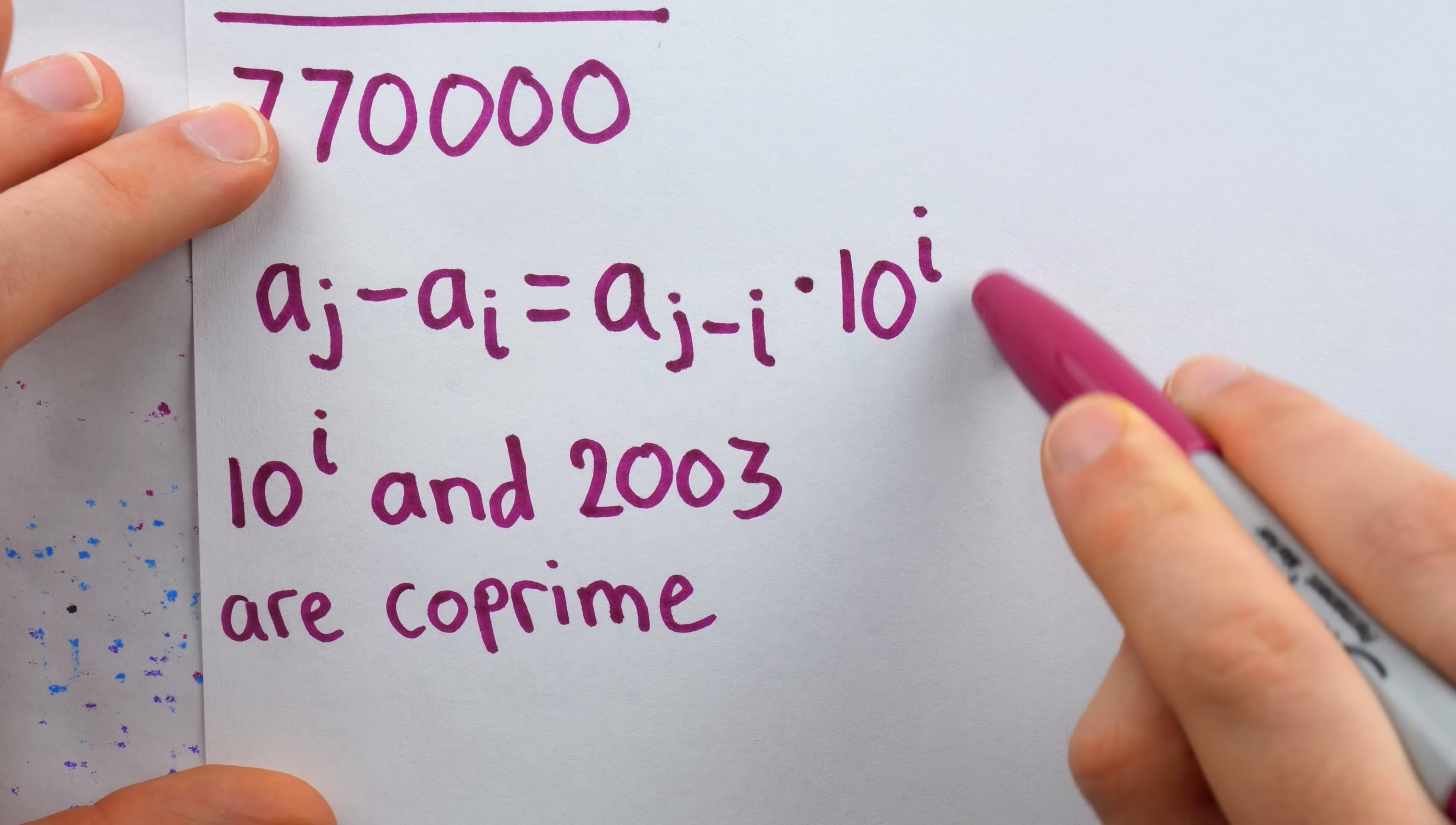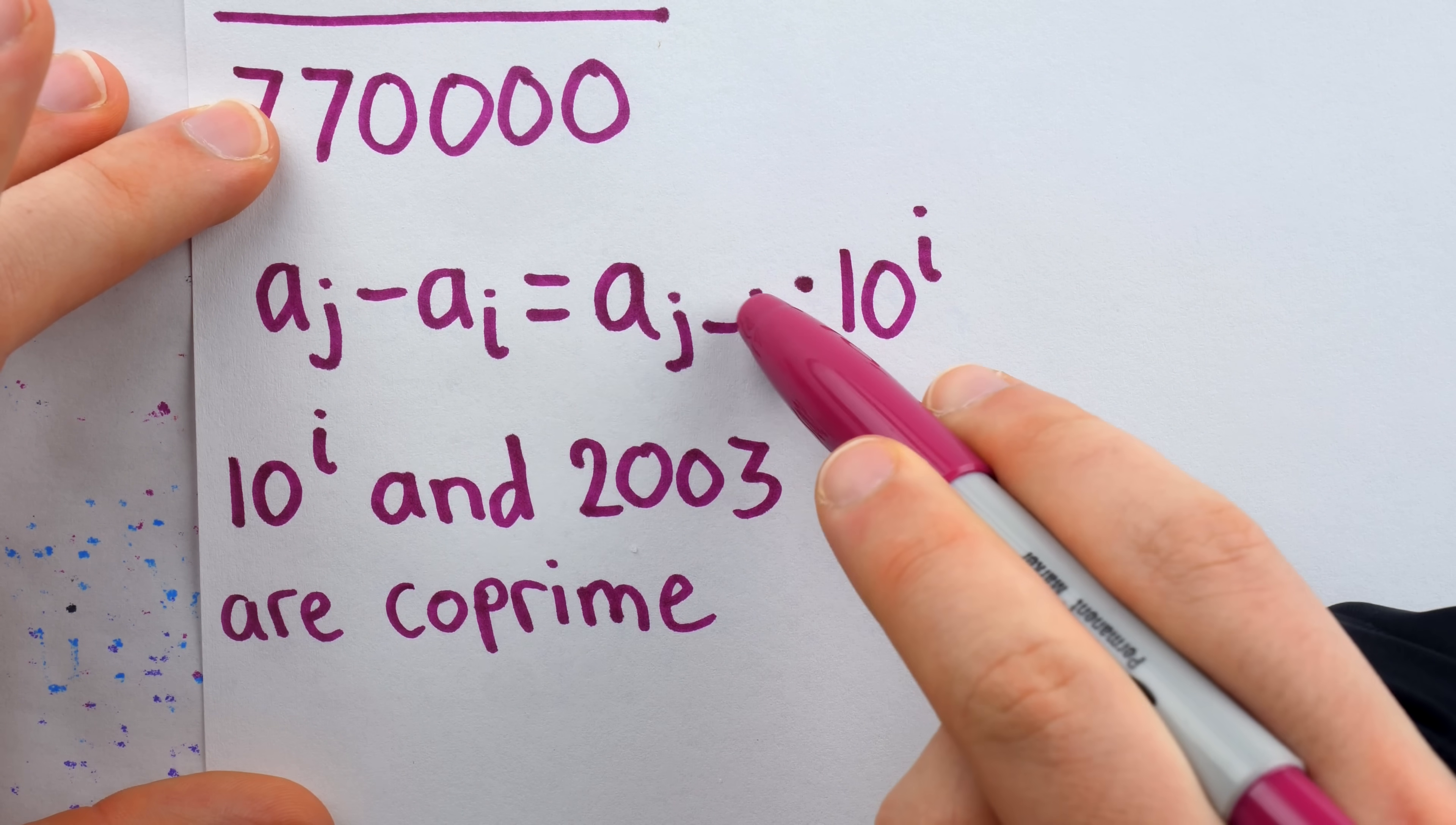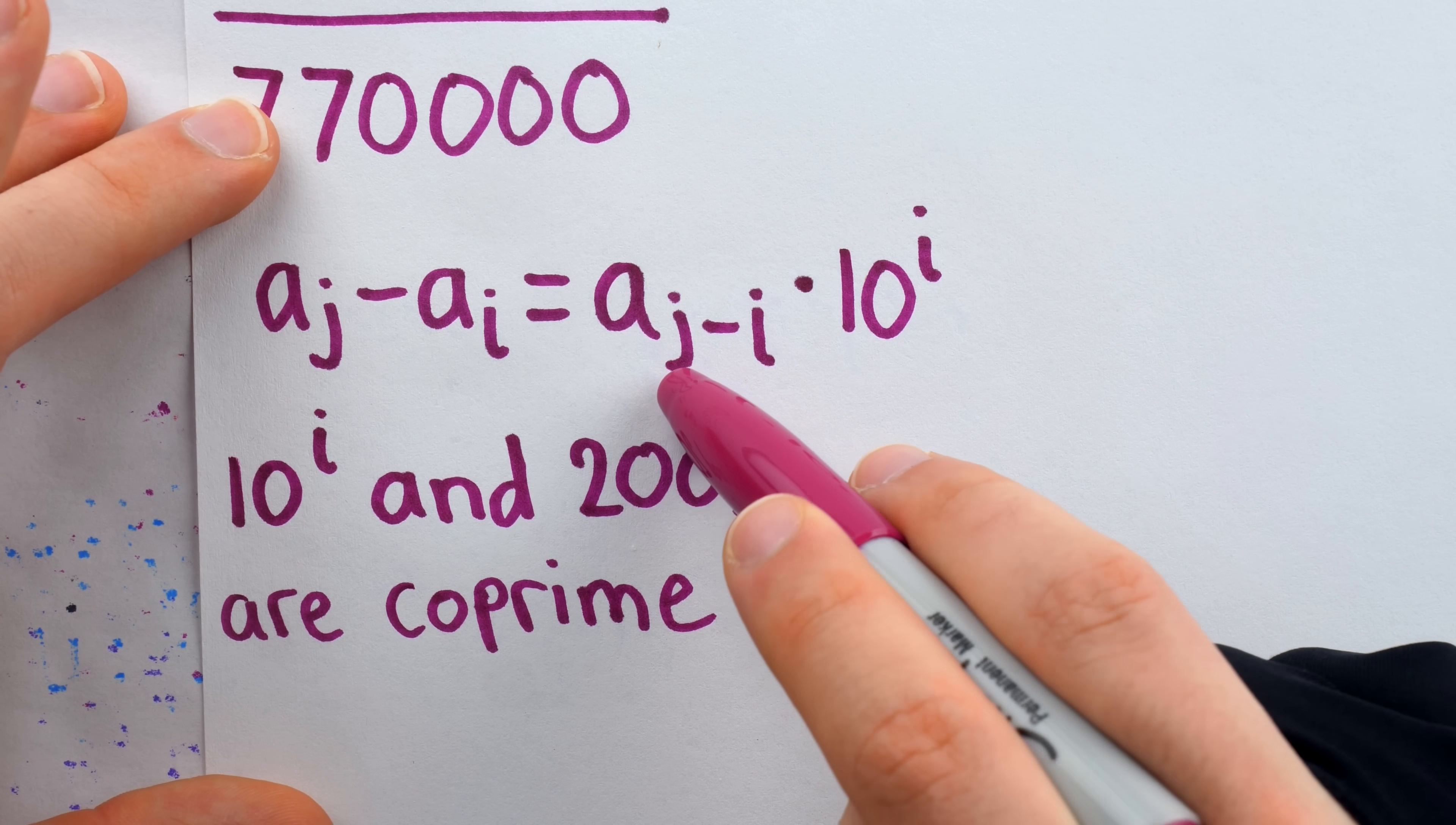That means for this number to be divisible by 2003, well, it's not coming from the ten to the i, because ten to the i doesn't share any factors with 2003. Instead, it's coming from A_(j-i). This number must contain the factors of 2003, and thus this number all on its own has to be divisible by 2003.